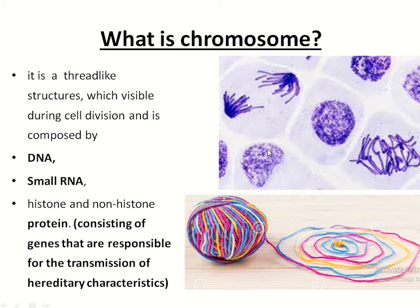What is a chromosome? It is a thread-like structure which is visible during cell division, and it is composed of DNA, small RNA, histone, and non-histone proteins. When DNA is highly condensed it is known as the chromosome. This is chromatin and this is chromosome.